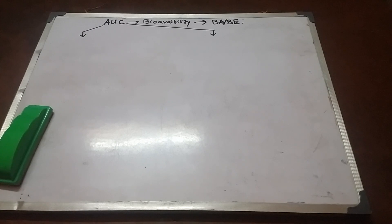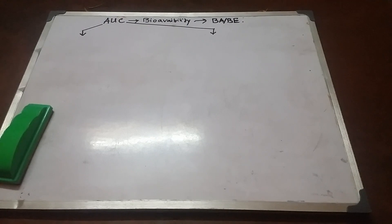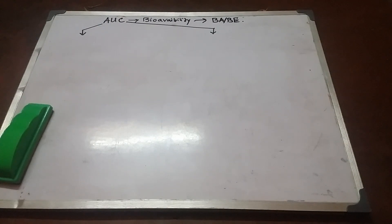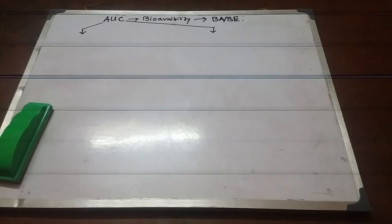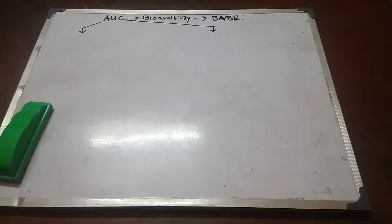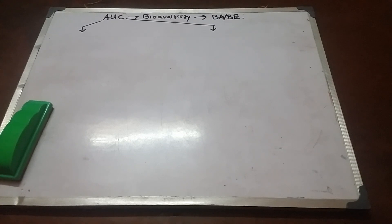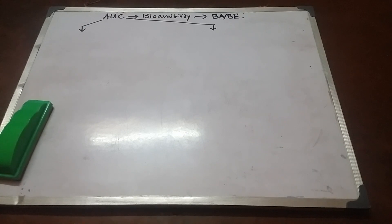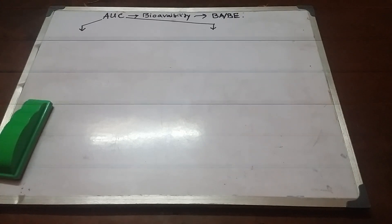Good morning. Today we are going to discuss the topic called area under the curve. Area under the curve, or AUC, signifies the bioavailability of the drug in the systemic circulation. The bioavailability — the rate and extent of the drug present in the systemic circulation — plays a very important role while studying parameters like bioavailability and bioequivalence. Hence it is a very important topic in biopharmaceutics and pharmacokinetics.